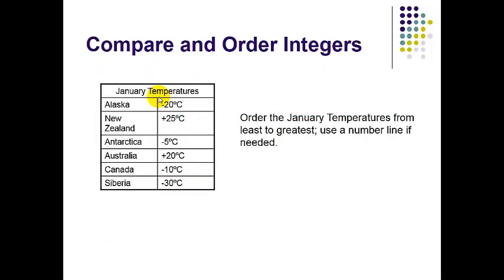Go ahead and write this example down. Pause the screen. You should be pausing it as you're going along. I want you to order them from least to greatest, and you can use the number line to help you out. I'm looking at the numbers, I'm spread out between like 30 and 25, so I'm going to go ahead and do increments of five.